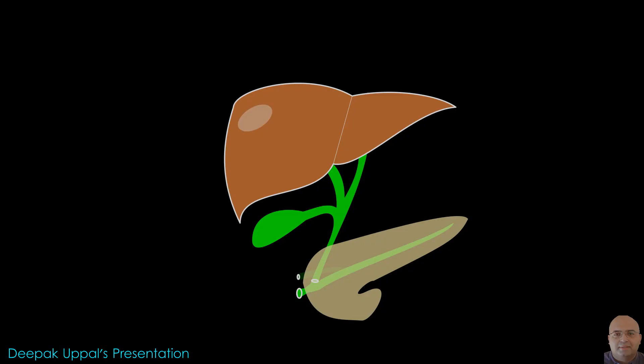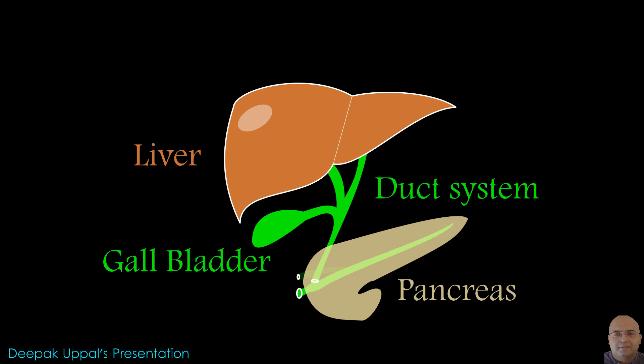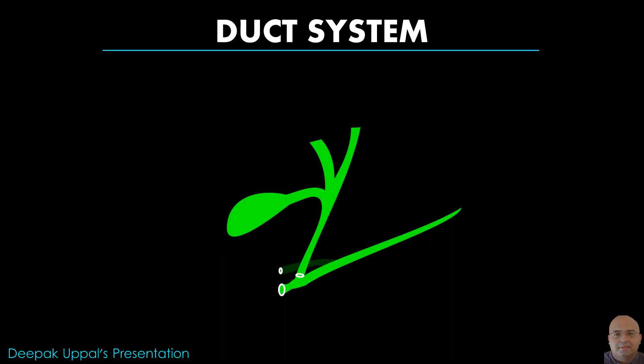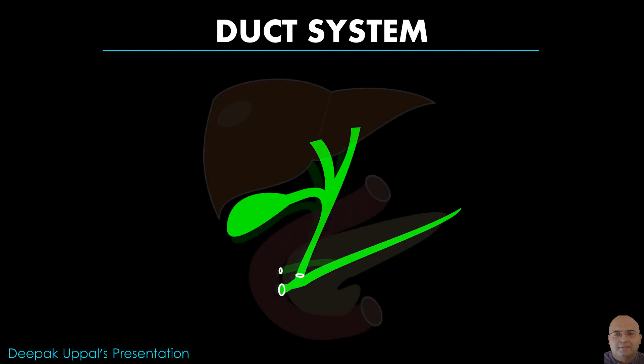Today we will explore how these glands are connected to the alimentary canal via the duct system. In this diagram we can see the liver, pancreas, gallbladder, and duct system. A duct system means how the ducts or channels of these organs are interconnected with the duodenum of the alimentary canal. We will also have a brief overview of the organs while discussing the duct system.